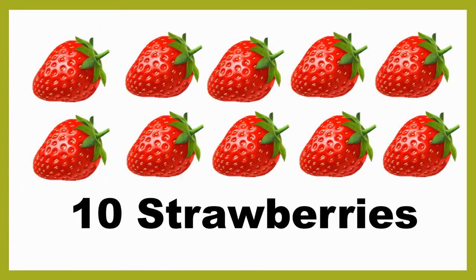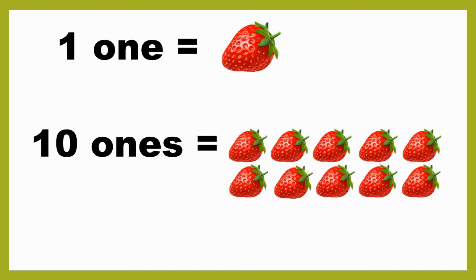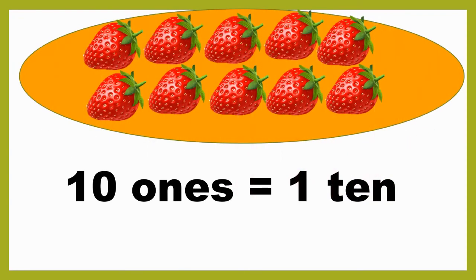Now look at these strawberries. Let's count them — 1, 2, 3, 4, 5, 6, 7, 8, 9, 10 — 10 strawberries. We know that 1 one means 1 strawberry. Hence, 10 ones means 10 strawberries. So when we group 10 strawberries together, we get one group of 10 strawberries.